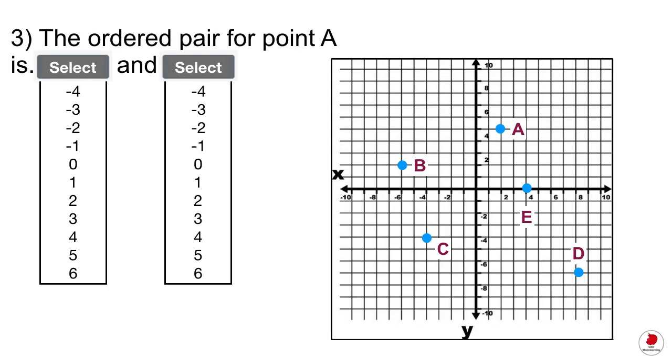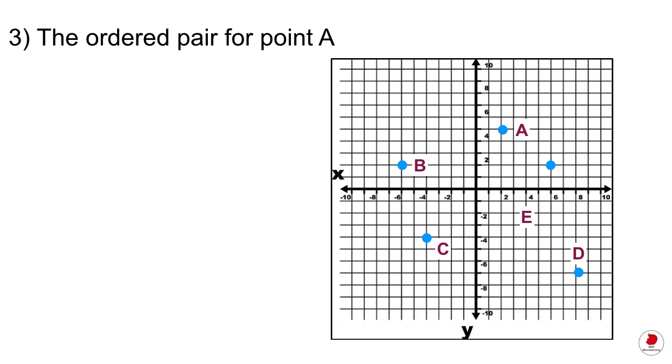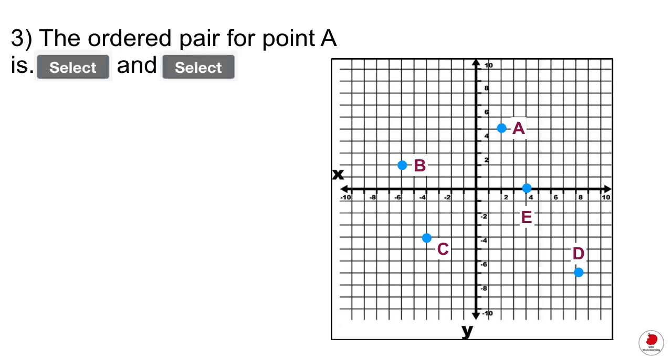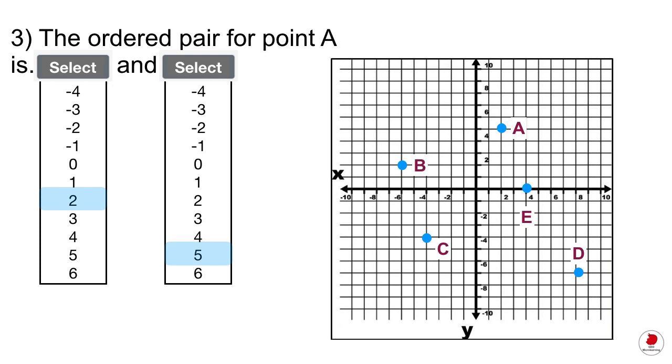The next question is one of these drop-down menus. It asks you to find the ordered pair for point A on the graph, and it gives you basically these drop-down menus where you're going to put the x-coordinate and the y-coordinate. If we find point A and then kind of follow that down to the x, you can see that the coordinate for x is 2. And if we do the same thing for y, you can see that the coordinate is going to be 5. So the ordered pair will be 2 and 5 for the y.